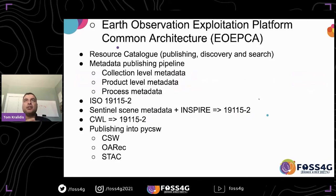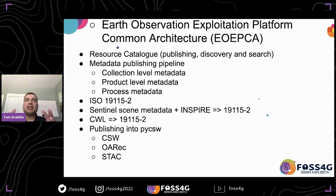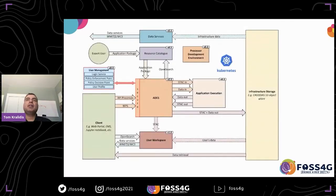There is also a project called the Earth Observation Exploitation Platform Common Architecture, or EOEPCA, which focuses on making EO data and pipelines available. It has a resource catalog component that allows for metadata publishing — publishing collection-level, product-level, and even process metadata. Metadata associated with data, products, or processes entering the EOEPCA system is used by pygeometa dynamically at runtime to create ISO metadata, which is published into pycsw to provide CSW and OGC API Records and STAC access.